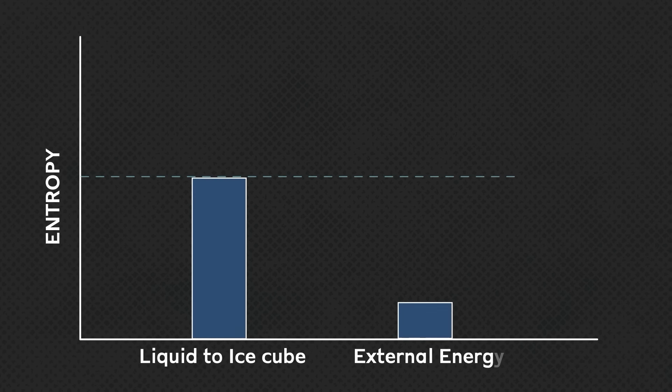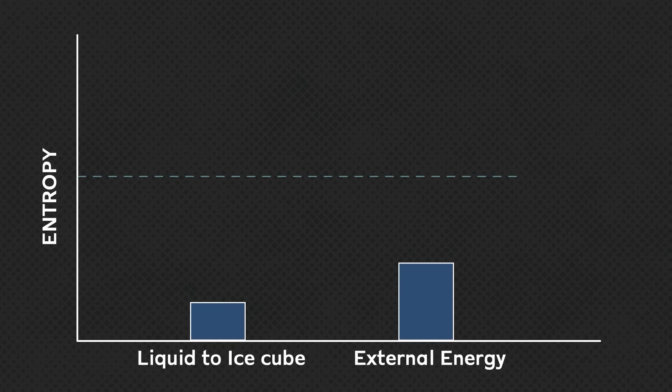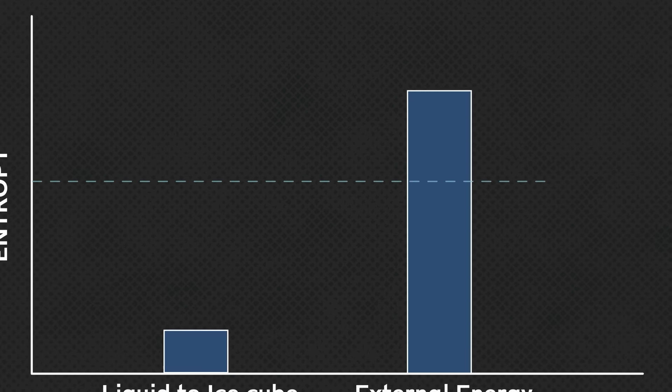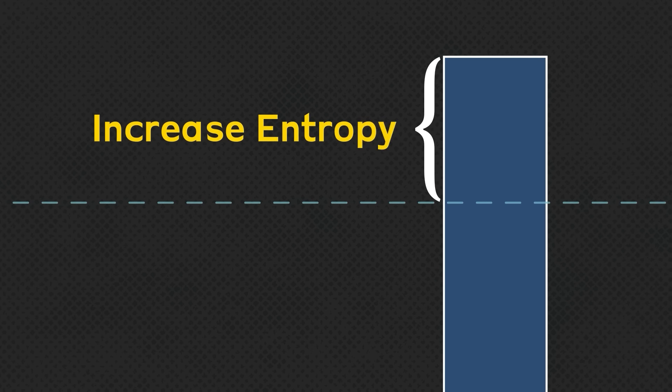लेकिन hold up — हम जिस process की बात की, उसका reverse भी possible है। I mean, हम water vapor को liquid और liquid को फिर से ice cubes में भी convert कर सकते हैं। और इसमें entropy increase होने की बजाए decrease हो रही है। Isn't that a violation of second law of thermodynamics? Well, not exactly. Liquid को ice cube में convert करने में liquid की entropy तो decrease हो रही है, लेकिन साथ ही उस process में जब हम external energy supply करते हैं, तो वो decrease हो रही entropy के मुकाबले ज़्यादा entropy increase कर देती है। So overall, universe में entropy increase ही हो रहा है, and the second law of thermodynamics is always correct and constant।